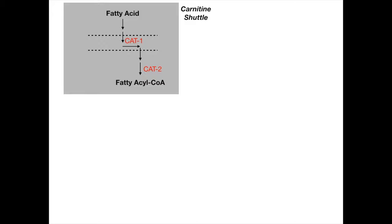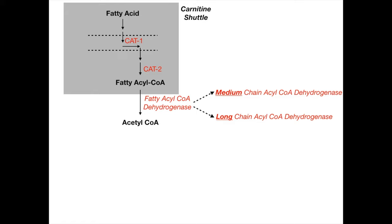The first step of beta-oxidation is to take fatty acyl-CoA and convert it to acetyl-CoA. The enzyme is fatty acyl-CoA dehydrogenase. On exams you may see it written as medium chain acyl-CoA dehydrogenase or long chain acyl-CoA dehydrogenase depending on the number of carbons in the fatty acid — only the chain-length prefix changes based on the reactant.